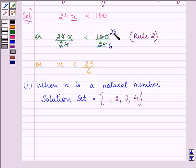And since we are given here that it is a natural number, so it would be starting from 1, 2 and goes on till 4. Hence, this is the solution set for the first part.